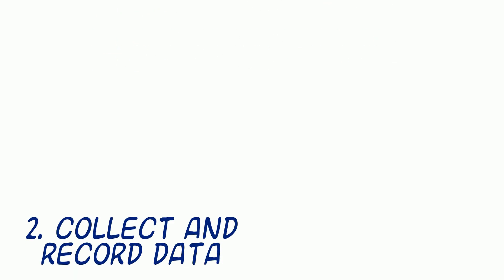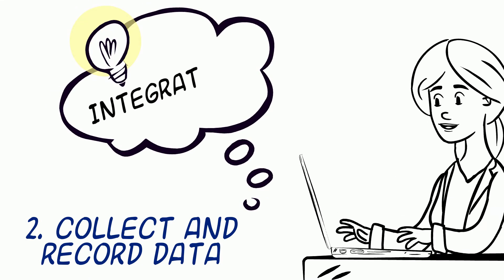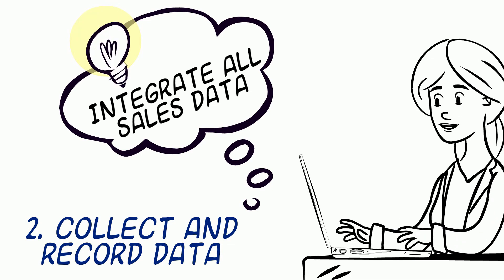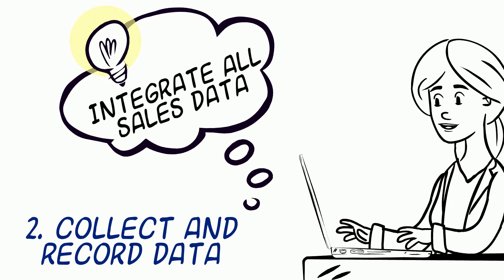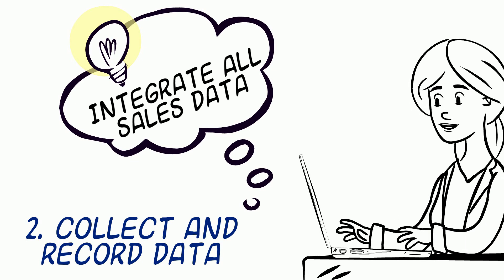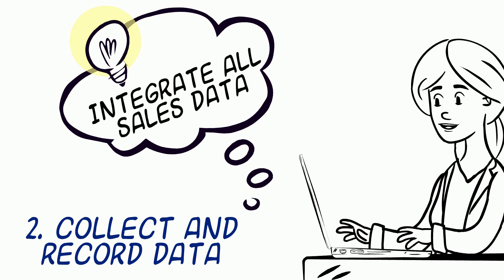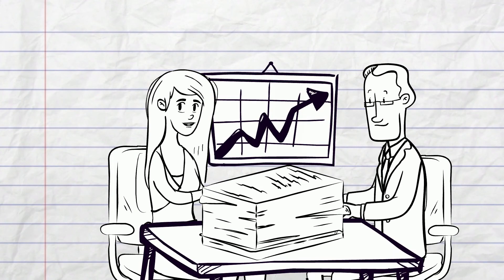Number two: collect and record data. Integrating all of the data from your sales channels can provide a cohesive view of actual product demand and insight into sales forecast. Being able to see the time and date of orders, SKUs ordered, and sales channels will help you forecast growth and trend projection on a more granular level, and look back to see how your forecast matched up with reality.